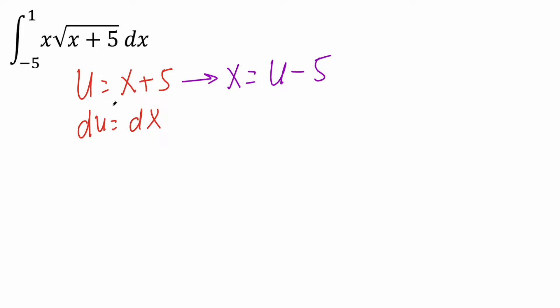Now we also have a definite integral bounded from -5 to 1. Let's relate these numbers with u. If x = -5, I can plug in -5 here, so I would get -5+5 = 0. Likewise, if we plug in 1, we get 1+5 = 6.